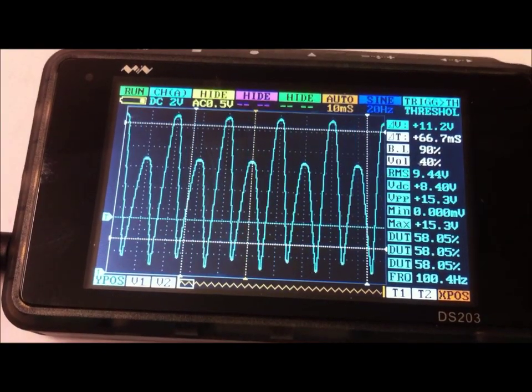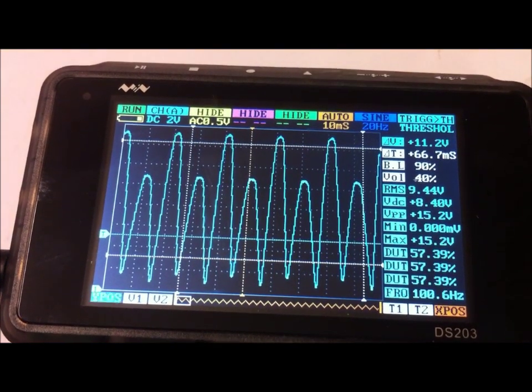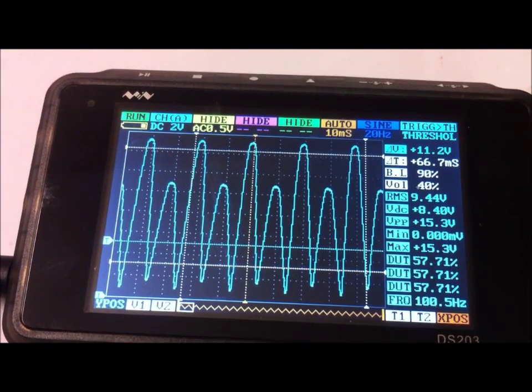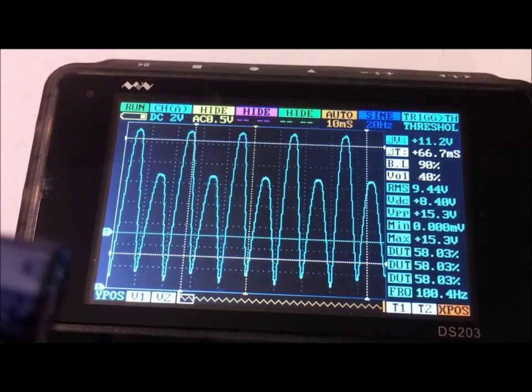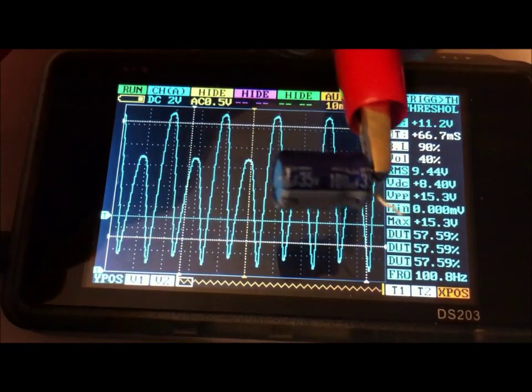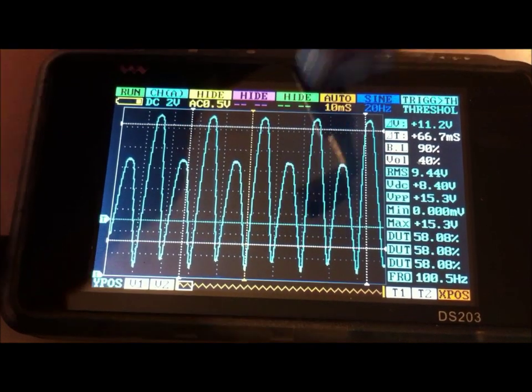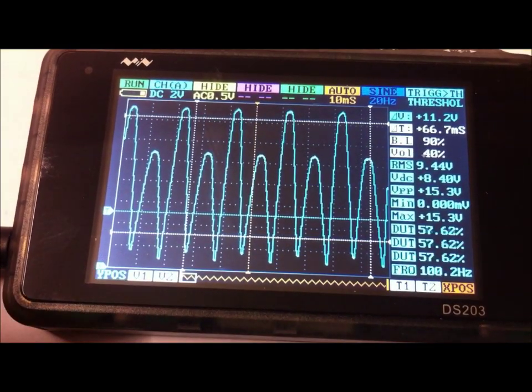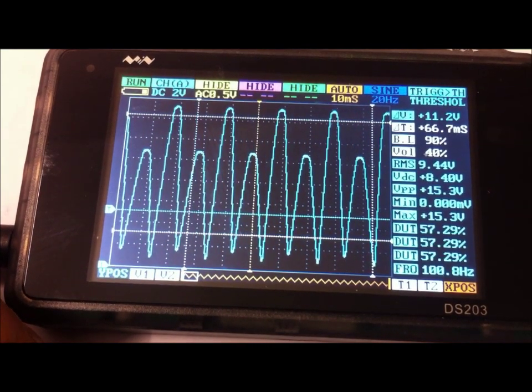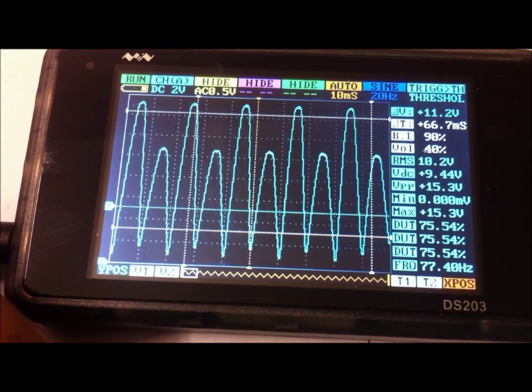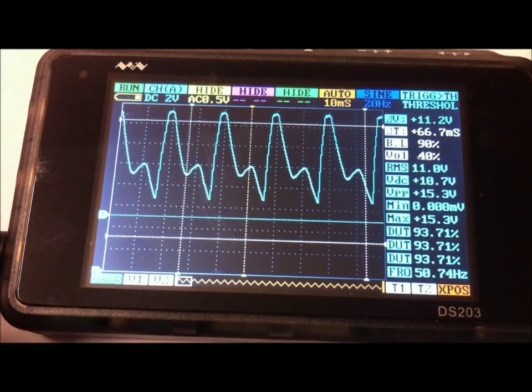So now we have the same waveform set to 2 volts per division and we're going to try and smooth this out to a proper DC instead of a pulse DC. So what I have here is a 35 volt 100 microfarad cap. We're going to connect that across the output and see what sort of voltage we get out of that. It's connected now and as you can see closer to a DC but not quite. So we'll take that off.